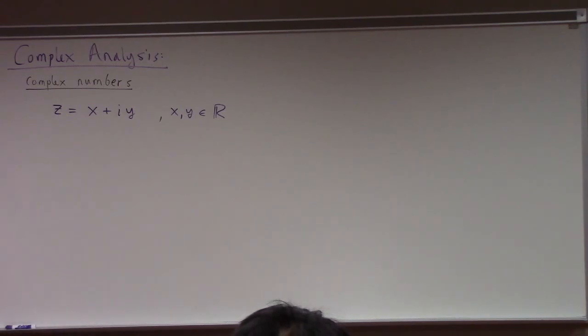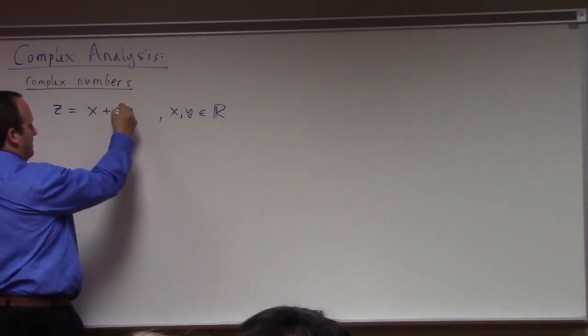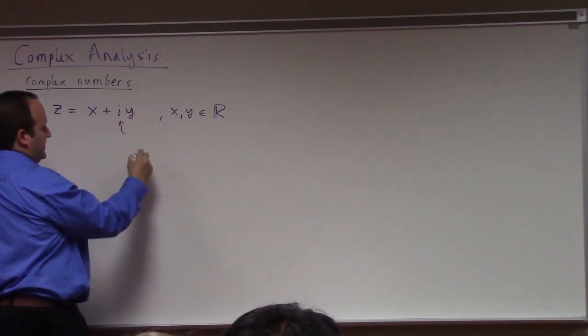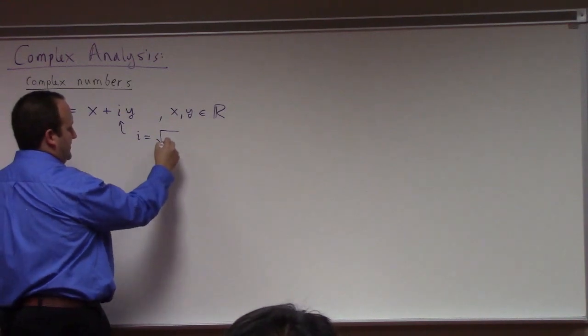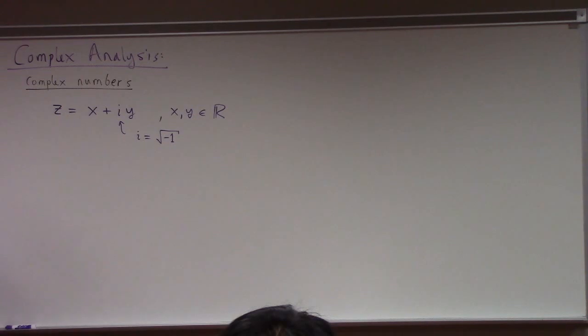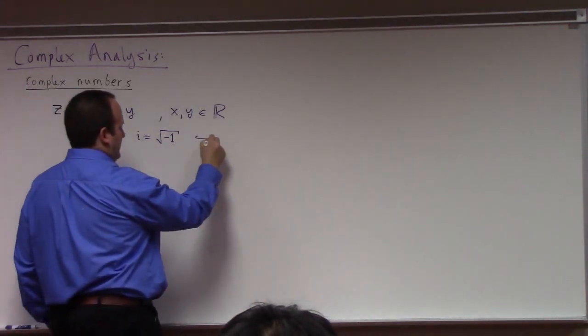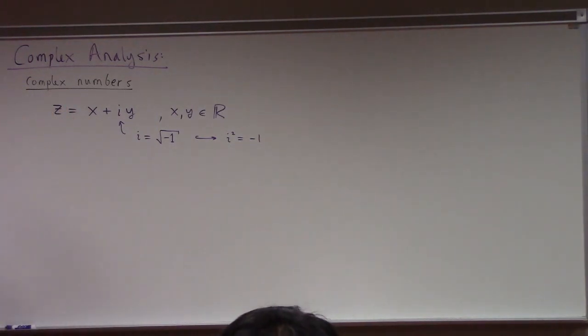And what makes this i special? So before 1777, when Euler invented this notation, people used square root of minus 1 for this. And basically because we have i squared is equal to minus 1, right?